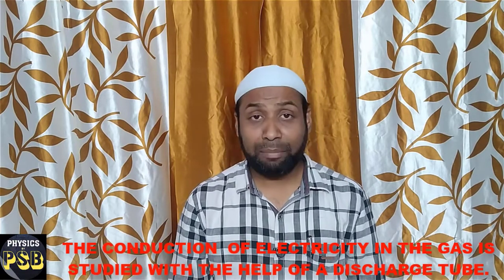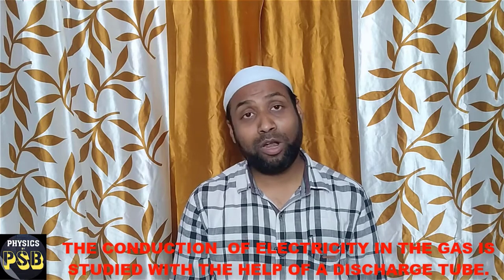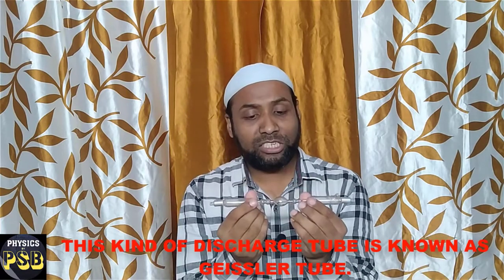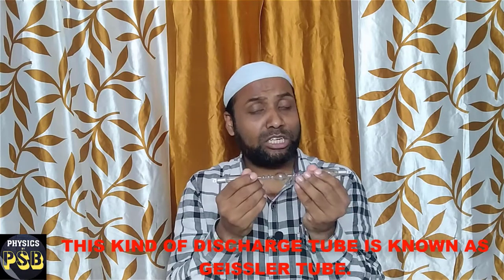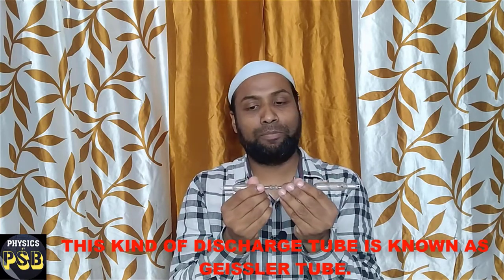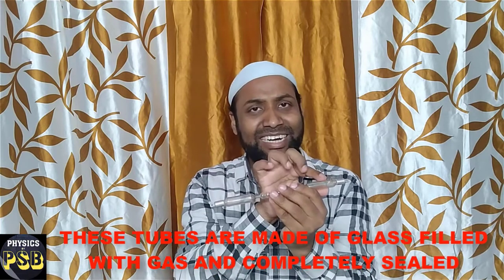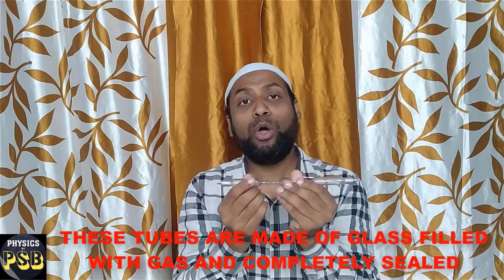The conduction in a gas can be studied with the help of a device known as a discharge tube. Discharge tubes are usually half a meter in length and 4 cm in diameter. They are made of glass. Here I have a small discharge tube. This kind of small discharge tubes are known as Gieseler tubes. They are made of glass, completely sealed, and filled with pure gases.